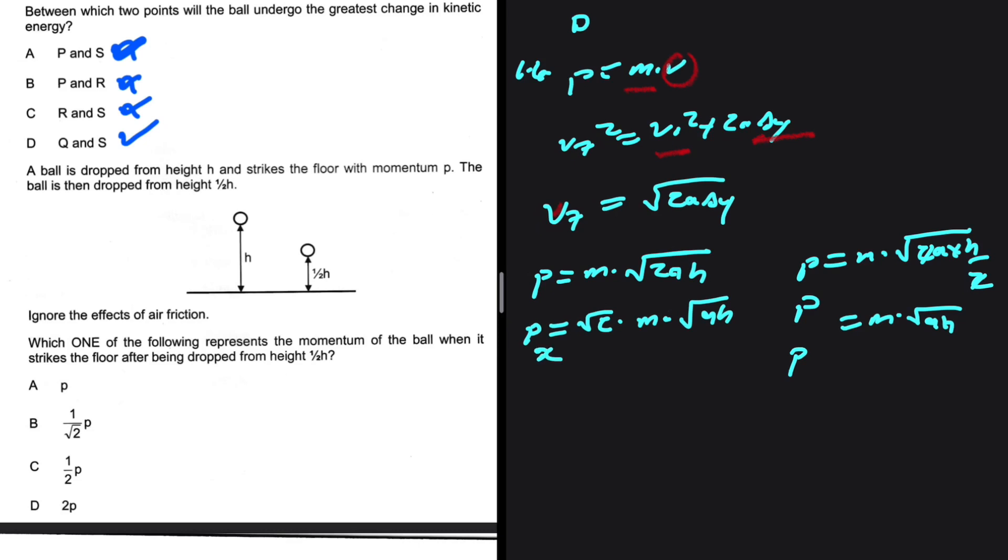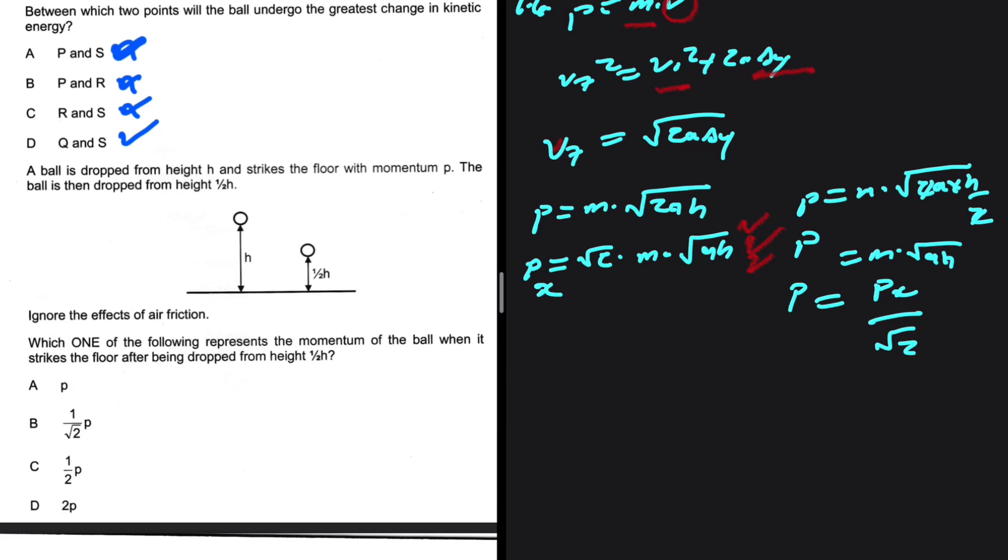The momentum when the object has been dropped from a height h, let's call this momentum px, will be equal to px divided by square root of 2. If you divide this by square root of 2, you get the momentum when the ball is dropped from a height of h divided by 2. So the answer to 1.4 is B because of that.